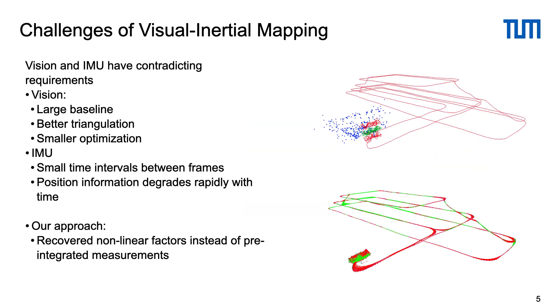The main issue is that for global mapping, vision and IMU have contradicting requirements to achieve good accuracy. For vision, large baseline is required for better point triangulations, so many approaches rely on a sparse set of keyframes that have large time intervals between each other. This allows reducing the size of the optimization problem but increases time intervals between frames. For IMU, small time intervals between frames are preferable as the position information degrades quickly with time.